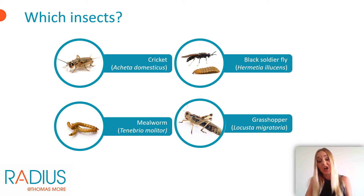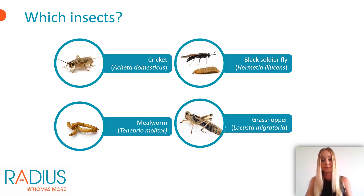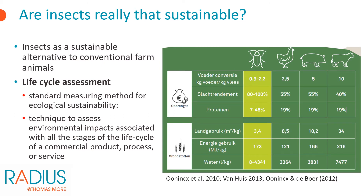Currently, a lot of research is being done on the rearing of insect species that can be used in food or feed. The most common are house cricket, black soldier fly, mealworms, and locusts. Insects are often promoted as an environmentally sustainable alternative to conventional farm animals. Depending on the species, insects have a lower feed conversion and a higher slaughter yield. They are said to contain proportionately more proteins and require less space. Some insects also require less water usage. The energy consumption is usually still relatively high because insects often have certain requirements for their climate conditions. However, until recently there were no large-scale rearing facilities, so this theory could not be tested against reality.